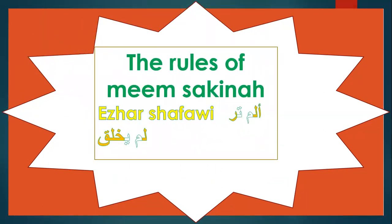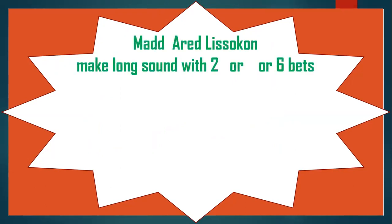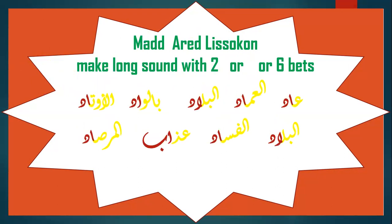Number three: the rules of Mim Sakinah. We can find the Ikhfa' Shafawi in أَلَمْ تَرَ — the mim is clear in pronouncing because it is followed by تَ, as in لَمْ يُخْلَقْ. Number four: Mad Arid li-Sukun — we can find this type of madd at the end of the ayah. How many beats — two, four, or six?